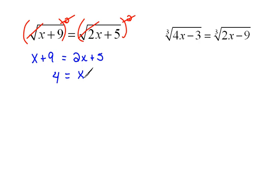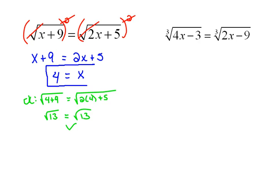So our answer here, hopefully, is a 4, but we do need to check. So the square root of 4 plus 9 should equal the square root of 2 times 4 plus 5. Okay, 4 plus 9 would be 13, and that's not a pretty square root, but that's okay. And here we have 2 times 4 would be 8, plus 5 is 13. So that is a true statement, therefore 4 is our answer.